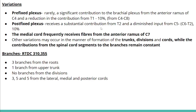Another variation is the post-fixed plexus, where it receives a substantial contribution from T2 and a reduced input from C5. This also occurs in about 10% of the population. Additionally, the medial cord frequently receives fibers from the anterior ramus of C7, which is another variation.